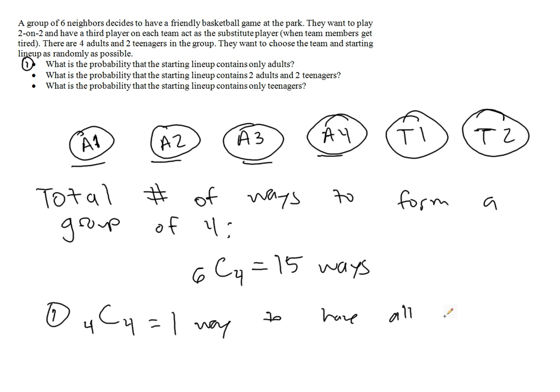You either have all four of them or you don't. So the probability of all adults, or the probability of having A1 and A2 and A3 and A4, would be 1 over 15. There's one way out of 15 possible ways in which we could get four adults.